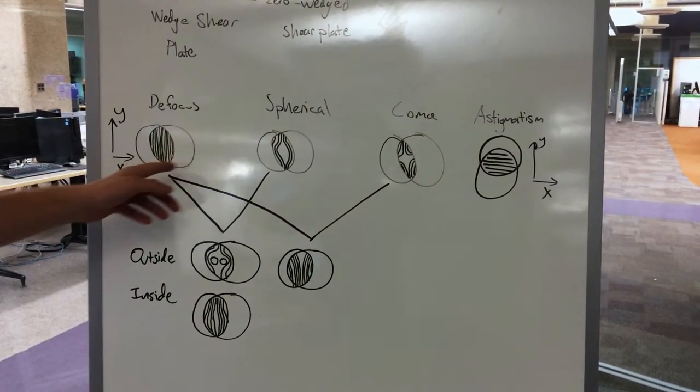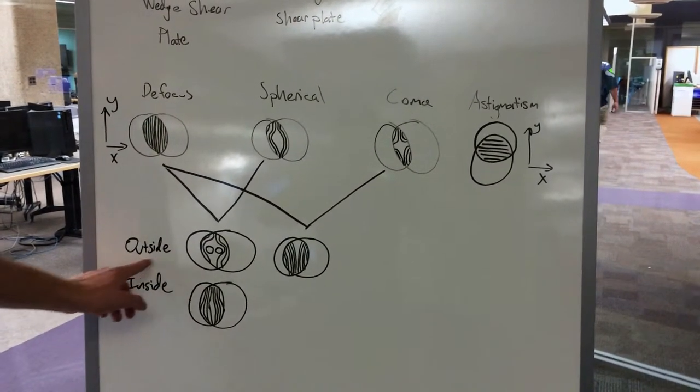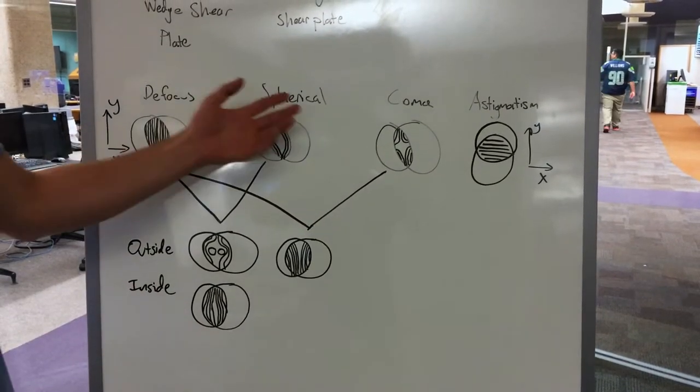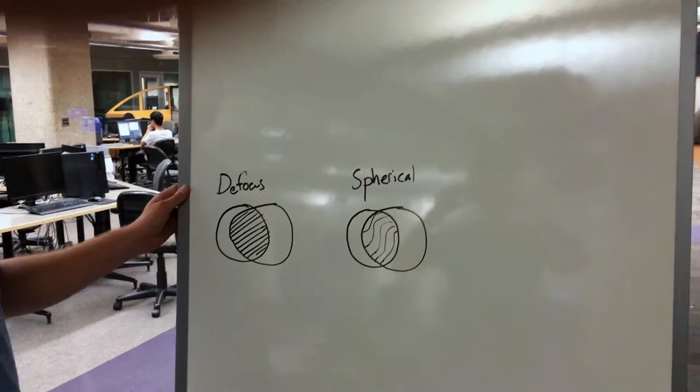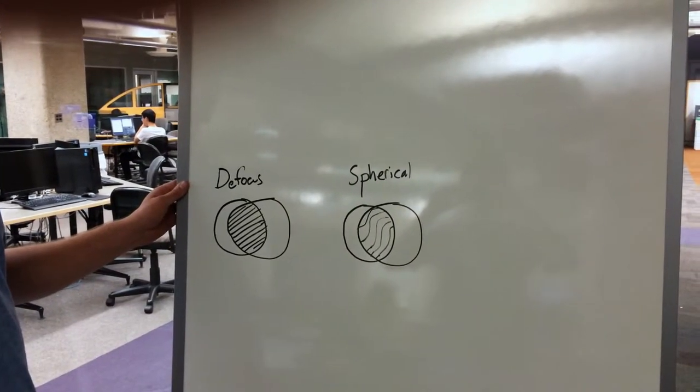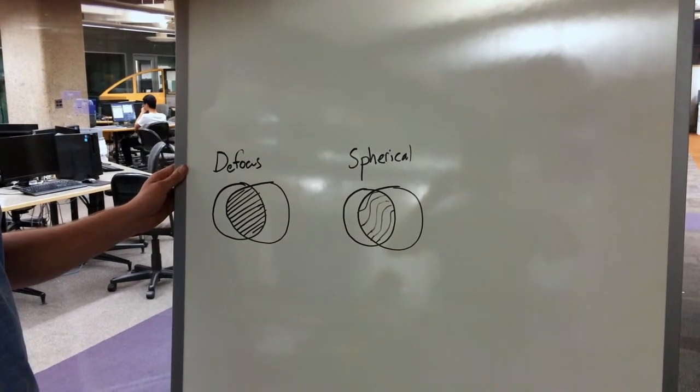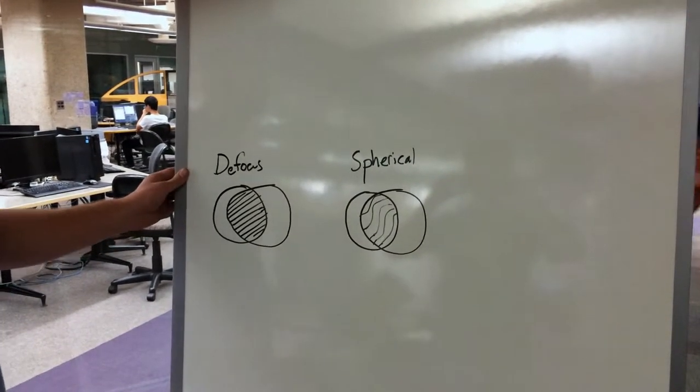We can combine spherical aberration and defocus. Outside of paraxial focus it looks like this, and inside it is here. If you combine defocus and coma, you see a pattern that separates towards the top. With aberrations from the wedge shear plate, we see that defocus has straight lines at an angle, and spherical aberrations look like an S-shape.